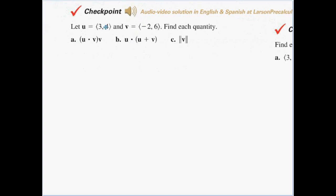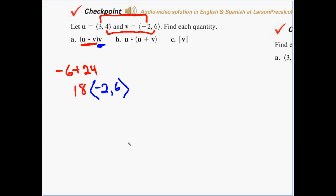They give us vectors u and v. For part a, let's do the dot product first: negative six plus four times six is twenty-four, so that becomes positive eighteen. Then that positive eighteen gets multiplied by vector v = (−2, 6). Distributing the eighteen gives us (−36, 108).